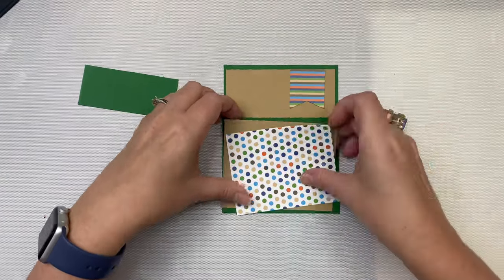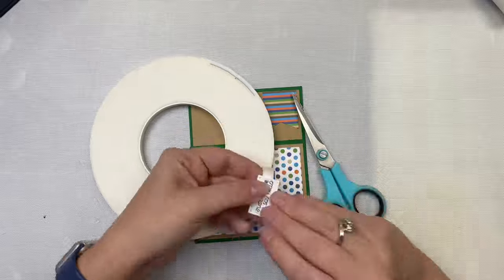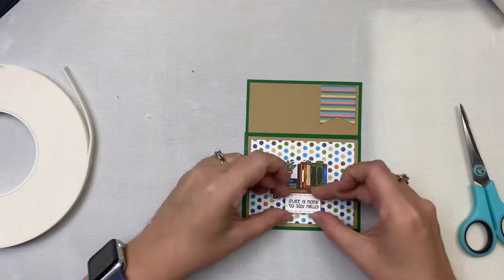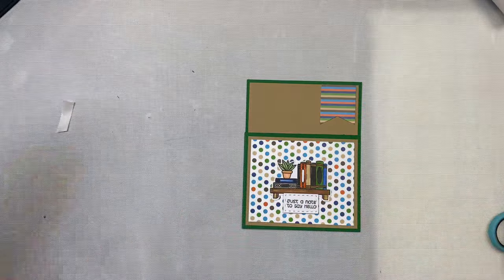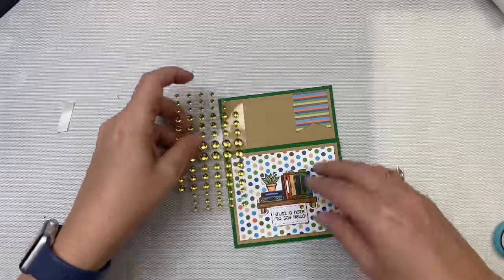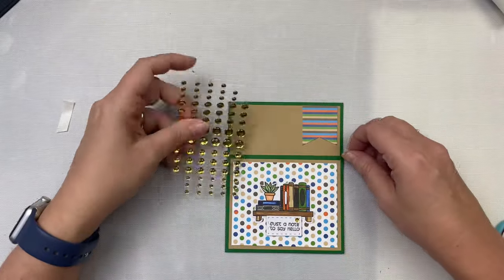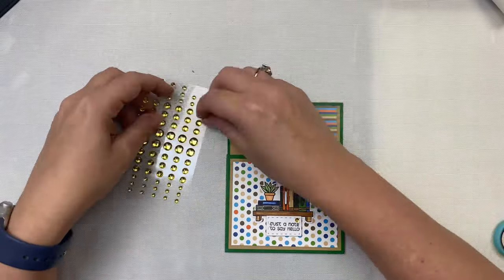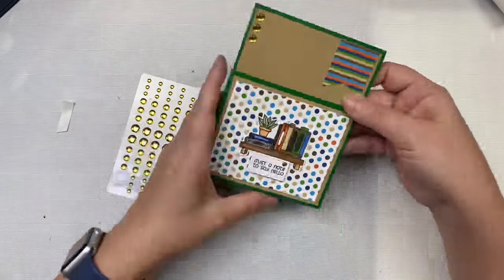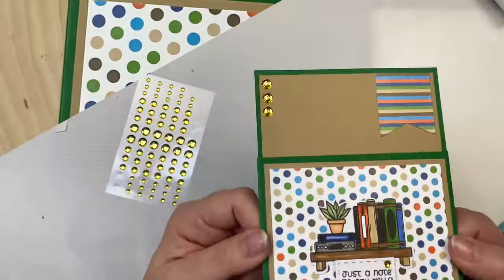I'm using a paper punch to cut off the end of the 1 and a half inch piece to make it a banner. For the image, I'm using the books with the shelf and the sentiment that says 'just a note to say hello.' I decided against using the green layer behind the image that I originally planned to use. I ended up cutting out the sentiment with a small rectangle stitch die from a previous crafty courtyard kit, and again I added a few gold enamel dots to finish off the card.